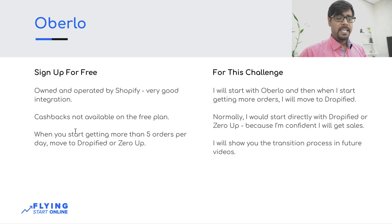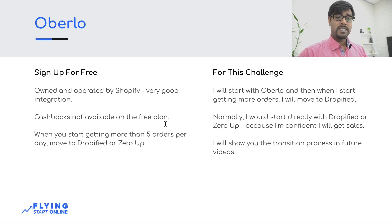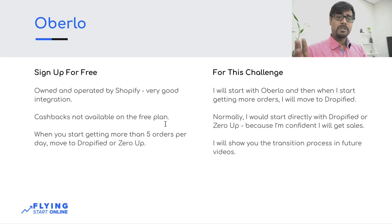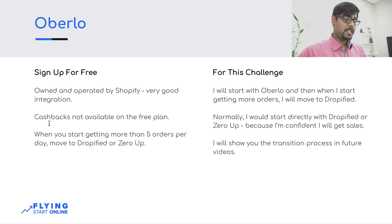My recommendation is: until you have 5 orders per day, don't think about Zoro or Dropified. With this challenge, I will start with Oberlo, and when my orders come I will switch to Dropified or Zoro. Because the Hindi channel has a budget and we are doing everything budget-conscious, I want to show that Oberlo is the way. The transition process from Oberlo to Dropified is something I will tell you in future videos when I reach 5 orders per day. Now we will start the step-by-step tutorial on Oberlo sign-up.